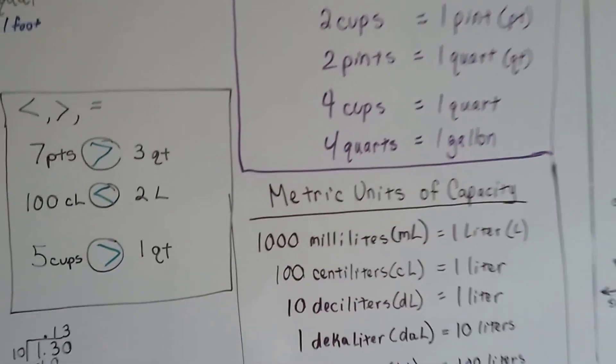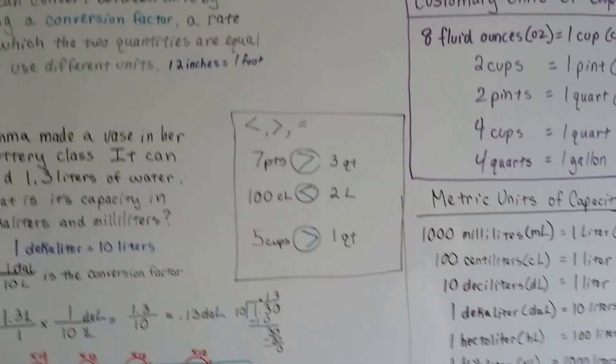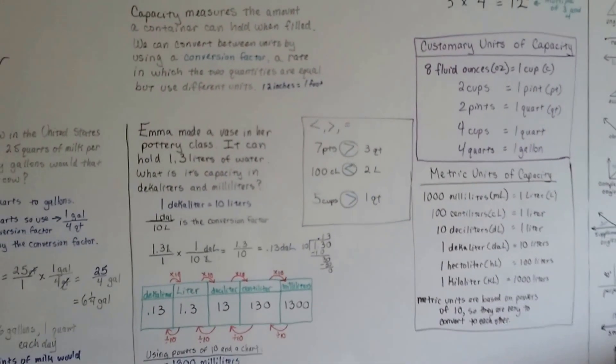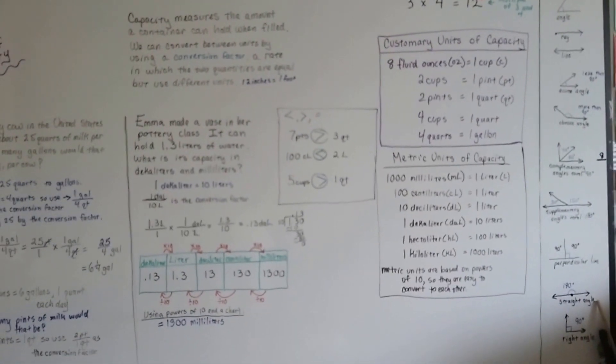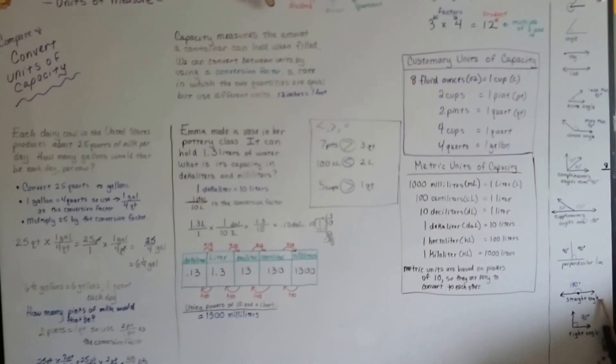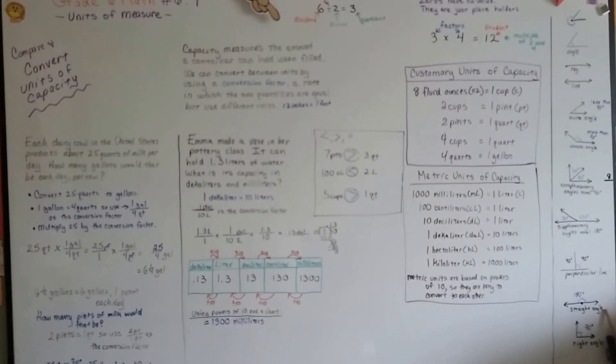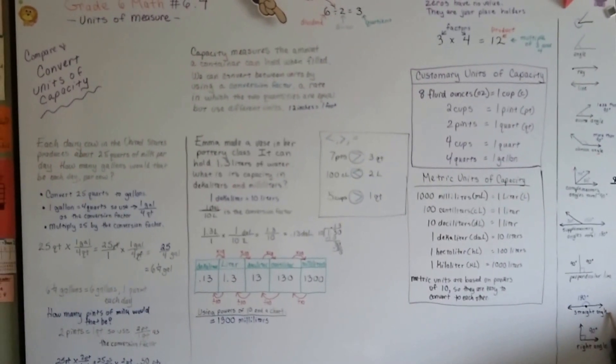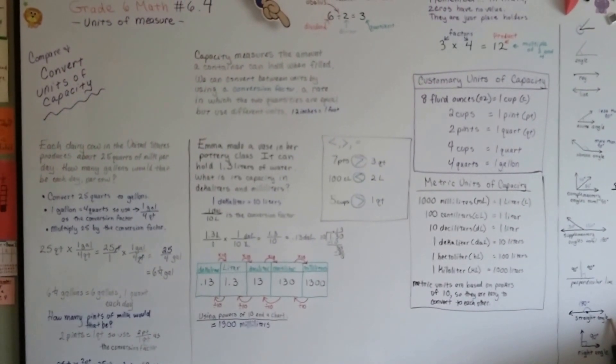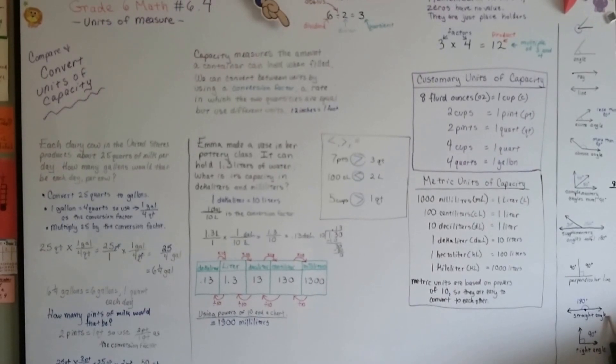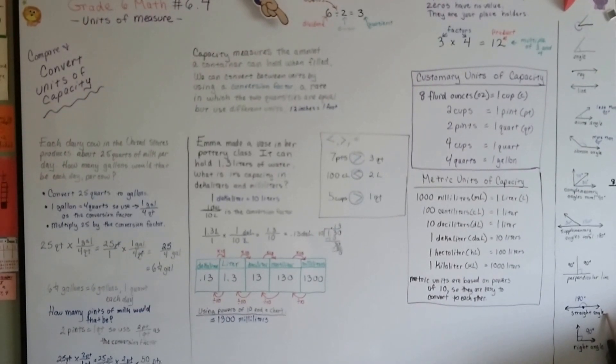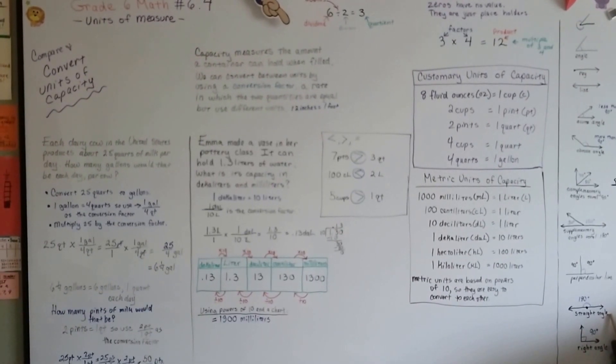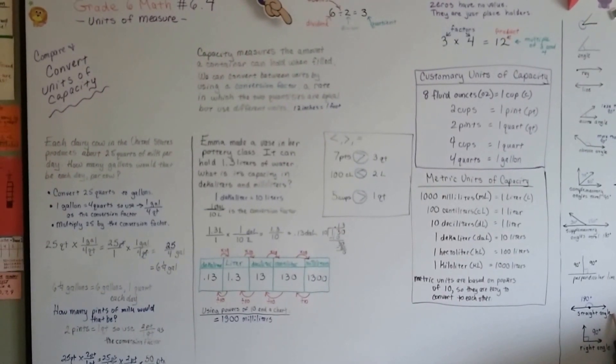They have conversion charts like this in the back of your textbook. They also have them online. They're very easy to find. You can use them as you're doing your work. Not everybody can memorize them, that's not necessary. But knowing how to read them and use them to convert, that is necessary. I hope you can do these on your own now. I'll see you next video. We're going to talk about weight. Bye!